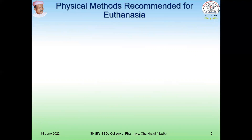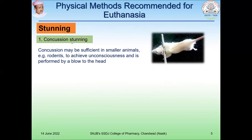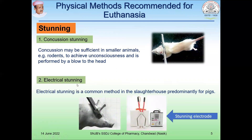There are two types of methods used for euthanasia in laboratory animals: physical methods and chemical agents. Under physical methods, the first is stunning. Concussion stunning may be sufficient in small animals like rodents — rat and mice — to achieve unconsciousness, and is performed by a blow to the head.